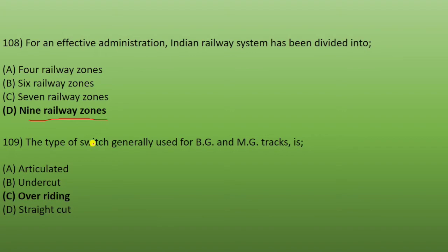Next: the type of switch generally used for BG and MG track. BG is broad gauge and MG is meter gauge — the overriding switch is used for these tracks. The options are straight cut, inter cut, and articulatory, but the answer is the overriding switch.